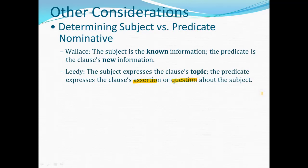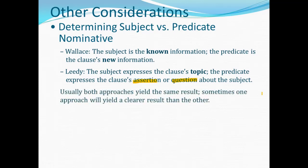The subject is what the sentence says something about. The predicate expresses what the sentence says or asks about its topic — the clause's assertion or question about the subject. These two different approaches will usually yield the same result, but sometimes one will yield a clearer result than the other. So it's worth taking both approaches in a difficult instance where you're having trouble figuring out which nominative is subject and which is predicate.